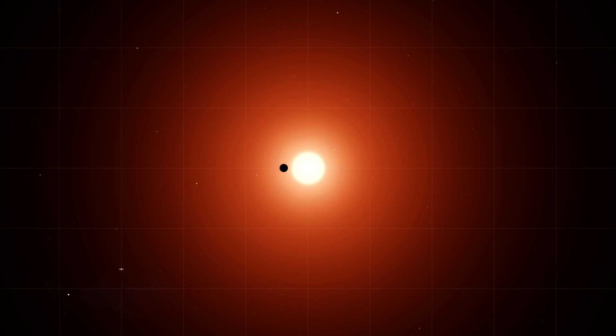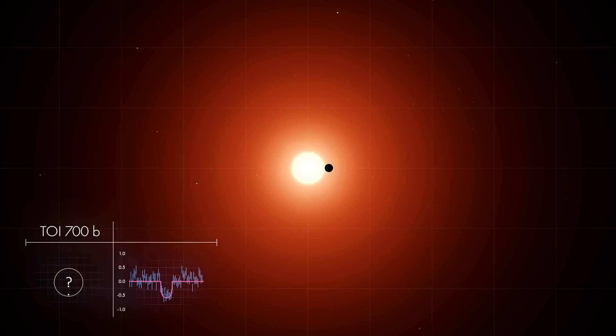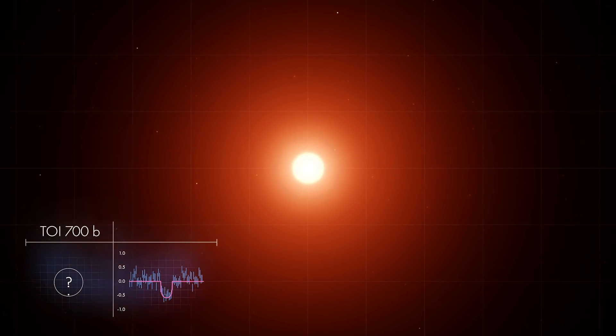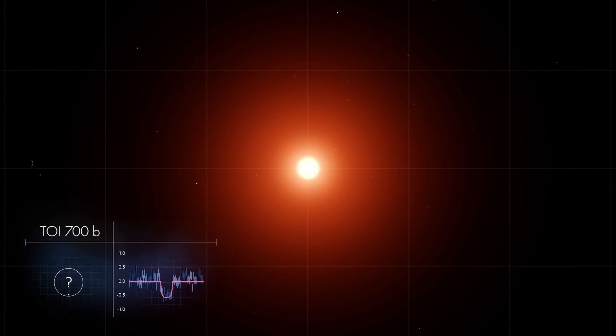One set of transits announced the presence of a planet close to the star, called TOI 700b. Another set revealed a second planet, named TOI 700c, a little farther out.